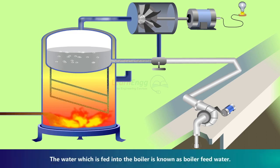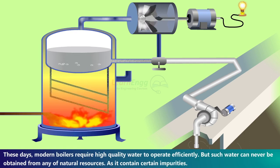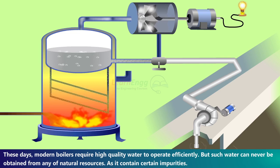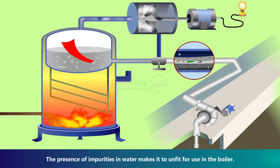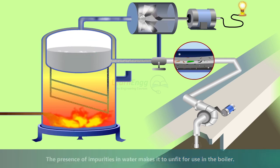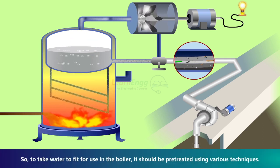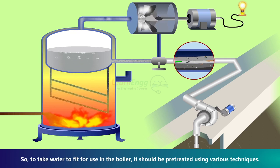The water which is fed into the boiler is known as boiler feed water. Modern boilers require high-quality water to operate efficiently, but such water can never be obtained from natural resources as it contains certain impurities. The presence of impurities makes the water unfit for use in the boiler, so the water must be pre-treated using various techniques.